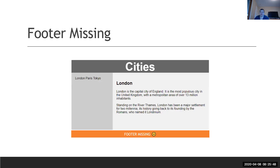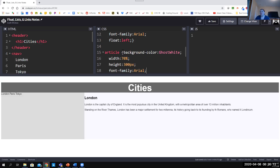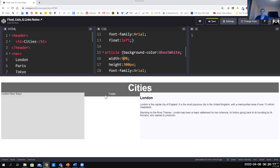Our footer is missing — what happened to it? When you float things, remember that not only do elements float left or right, but other elements around them are allowed to float behind, to the side, and above them. So our footer is actually sitting behind our article. If we change the article to 50% width you can see the footer appears — it's behind the article, sitting right up where the header ends.